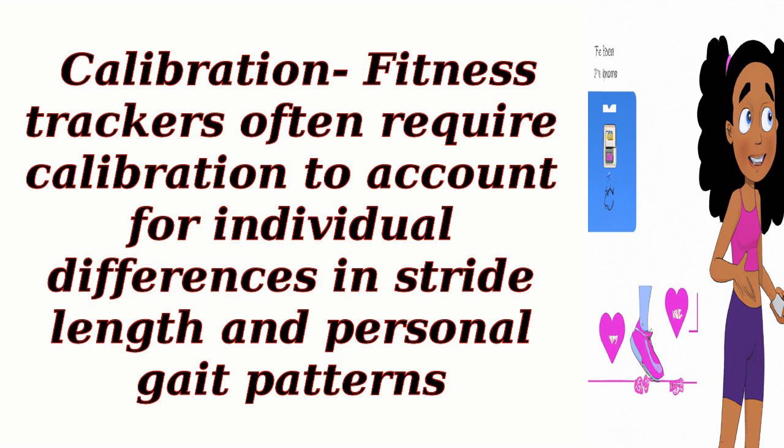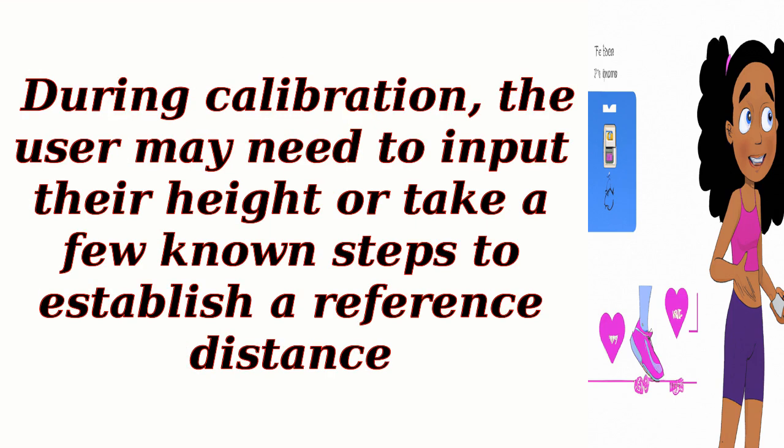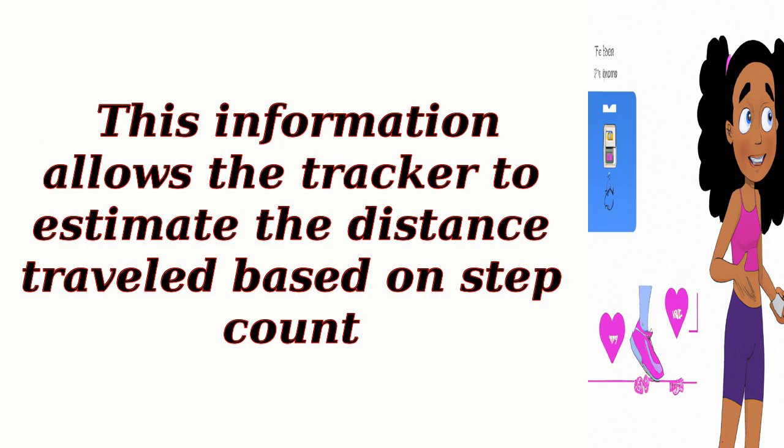Calibration. Fitness trackers often require calibration to account for individual differences in stride length and personal gait patterns. During calibration, the user may need to input their height or take a few known steps to establish a reference distance. This information allows the tracker to estimate the distance traveled based on step count.